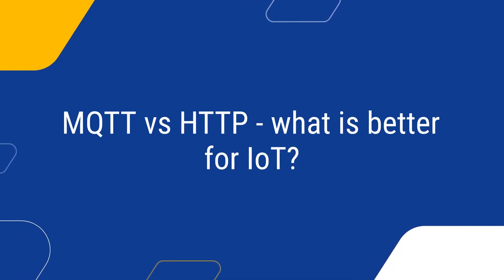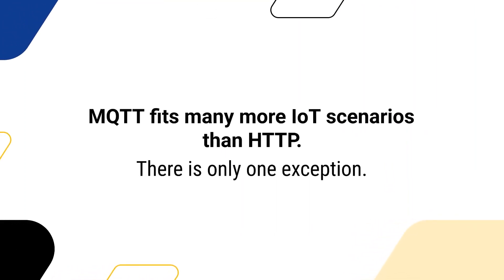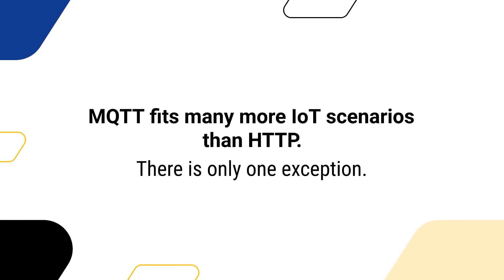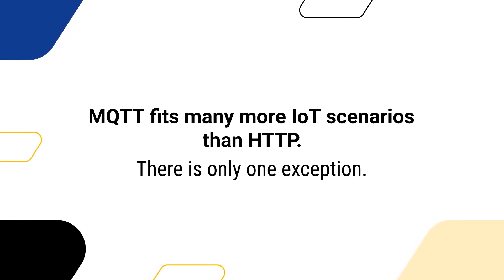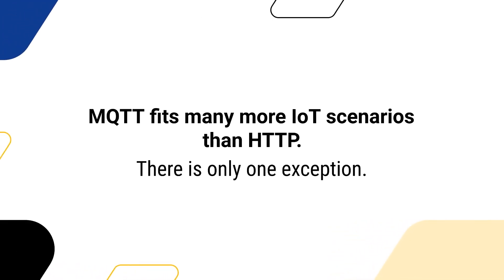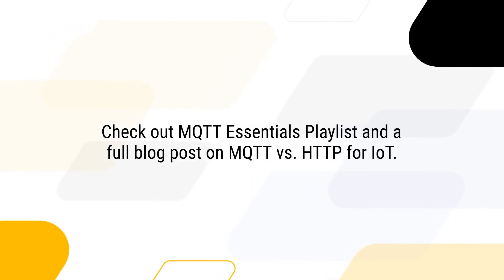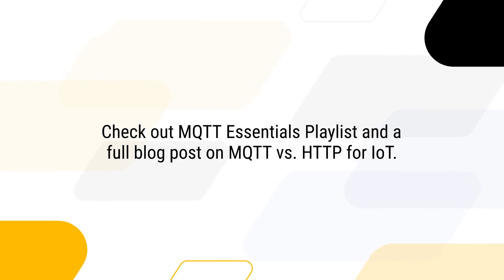So, what is better for IoT — MQTT or HTTP? MQTT fits many more IoT scenarios than HTTP, as it was designed for the Internet of Things. An exception: HTTP might be a valid choice to connect devices which already have an HTTP client installed to a provider which has an HTTP option, but only for low-volume data transmission and without the option of sending control commands to the device. Check out the MQTT Essentials playlist to learn more, and head to our full blog post on MQTT vs HTTP for a more detailed technologies comparison.